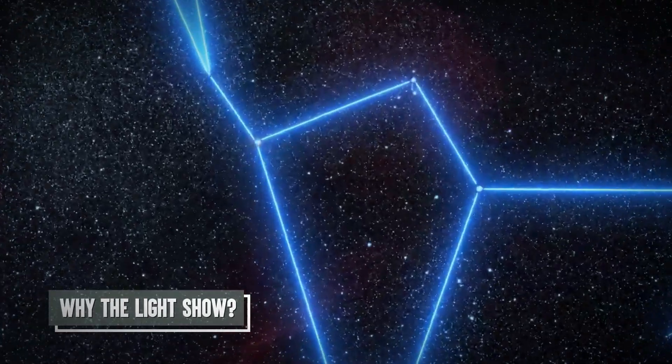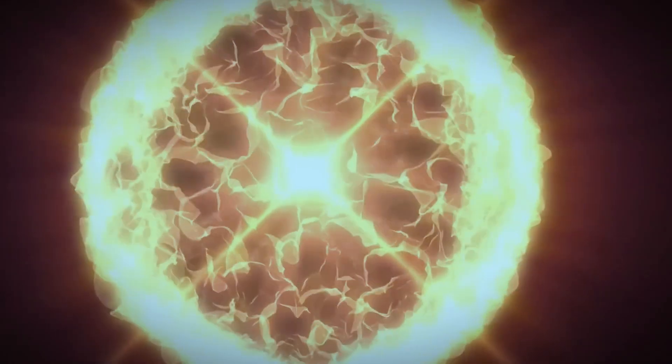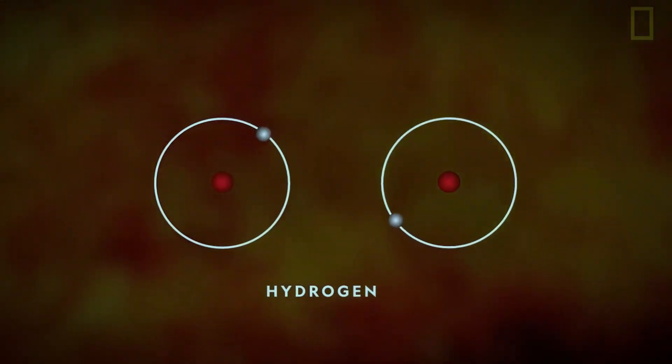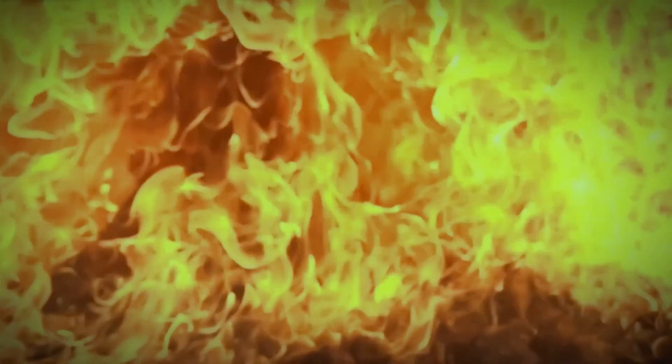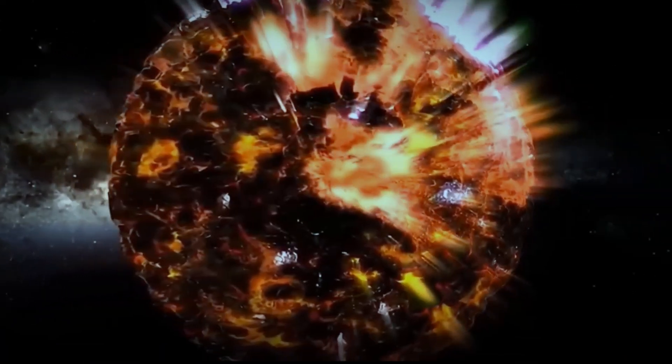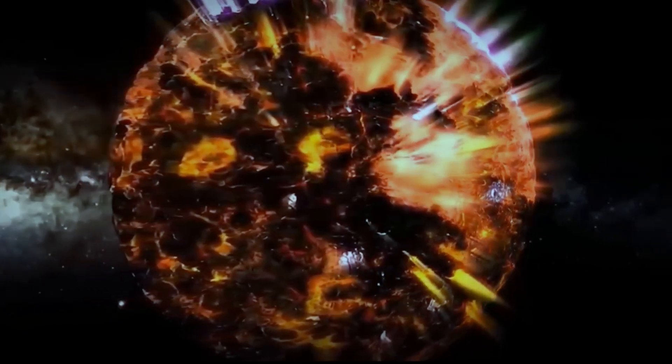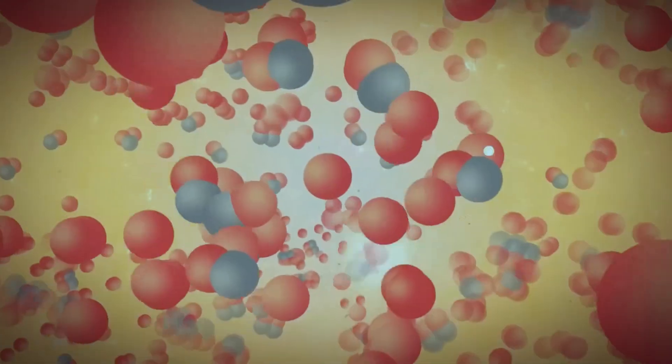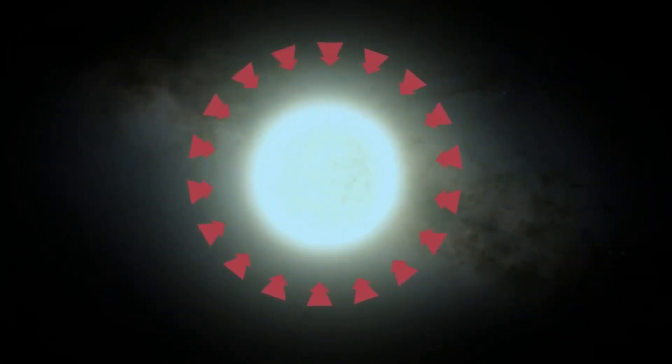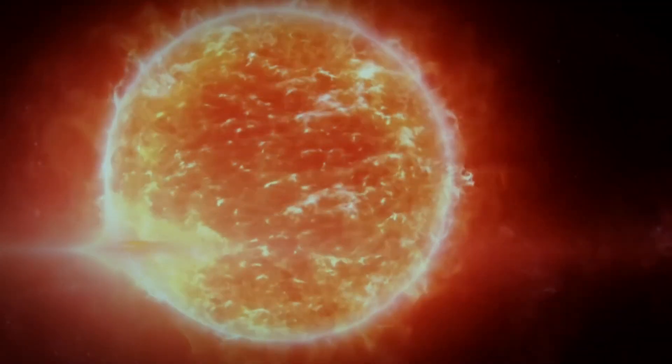Now, why the light show? Deep within its core, nuclear reactions are going wild. Hydrogen atoms are having a party, fusing into helium and releasing a burst of energy. This energy pushes the star's outer layers to expand, cool down, and decrease in brightness. But just when you think the party's over, the outer layers contract, heat up, and voila! The star is back, shining bright. It's a stellar cycle of expansion and contraction that keeps astronomers on their toes.